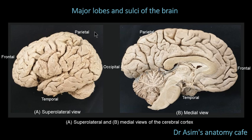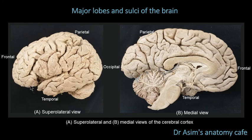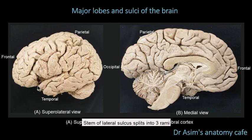Let's identify the sulci first and then we'll find the exact extent of the different lobes. Starting with the lateral sulcus — looking at the lateral view of the cerebral cortex — you can see a sulcus between the temporal lobe down below and the frontal lobe at the top. The lateral sulcus has a main stem and then splits into different rami or branches. The stem is at the base of the brain on the inferior surface, moving laterally outward, separating the temporal lobe from the frontal lobe above.